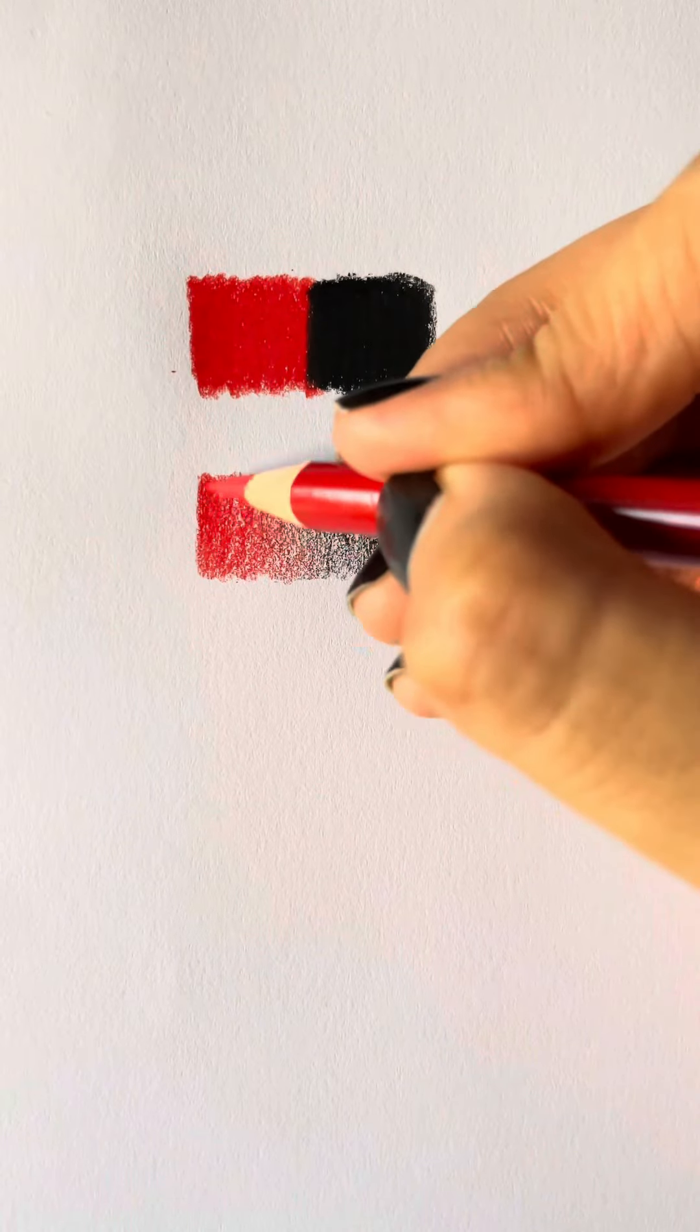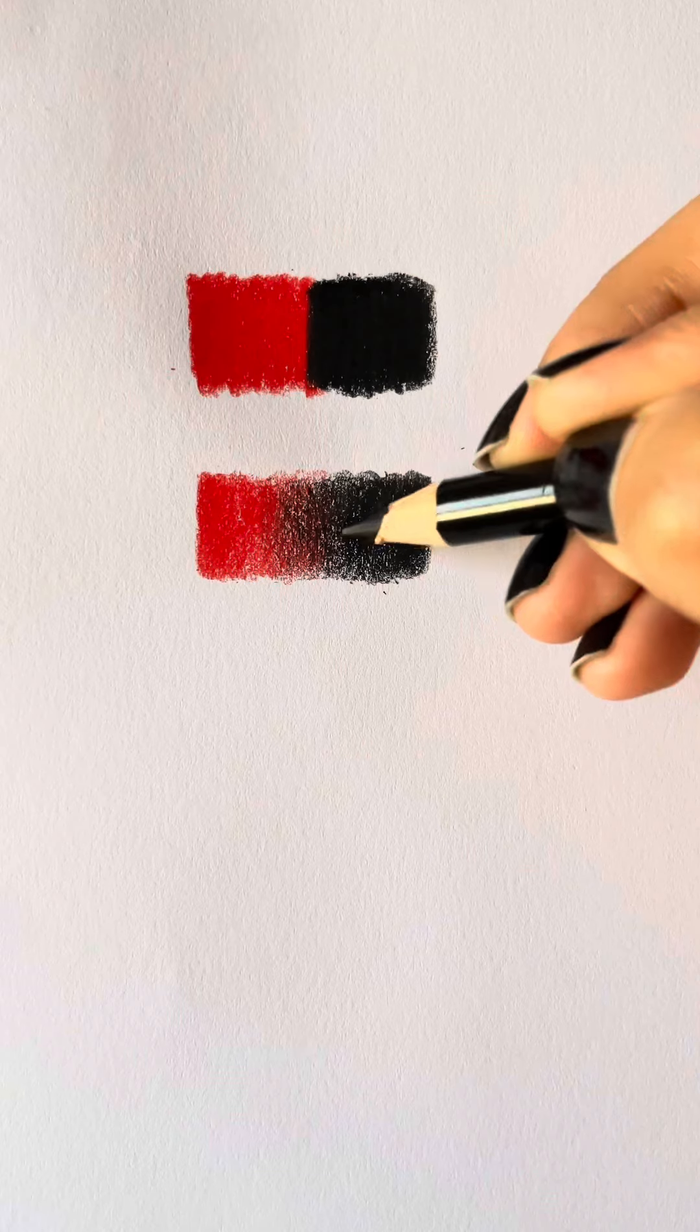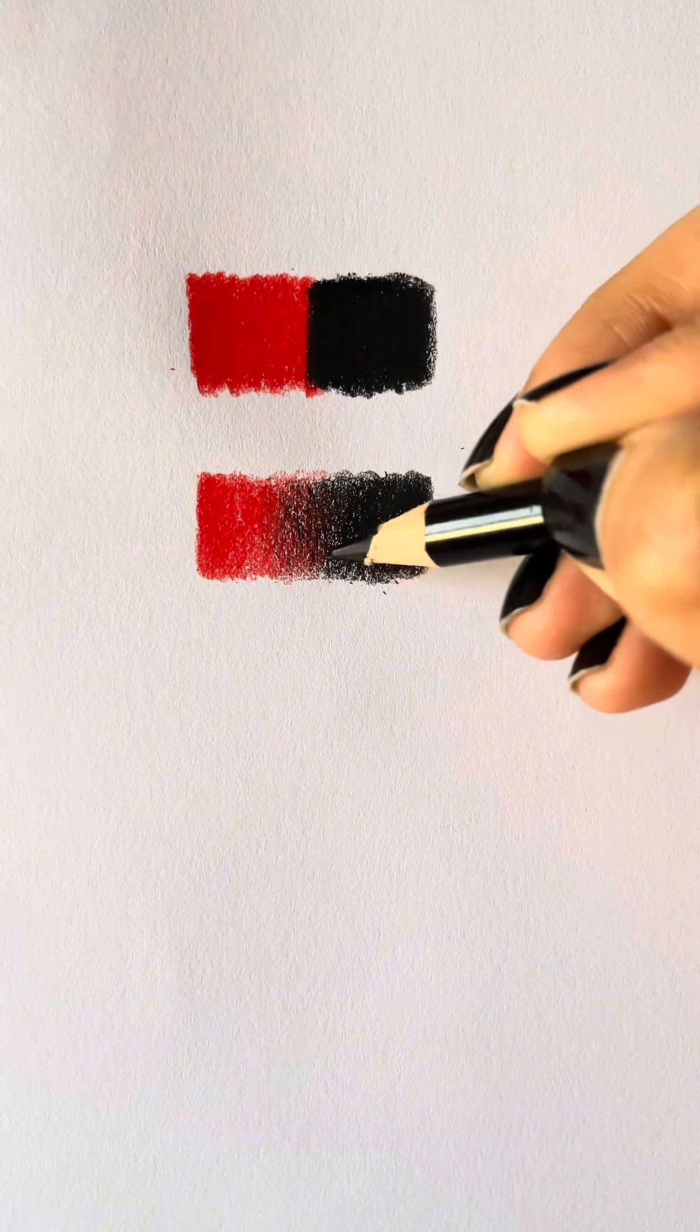Now make a second layer using the same overlapping trick. And after about two or three layers, it should look something like this.